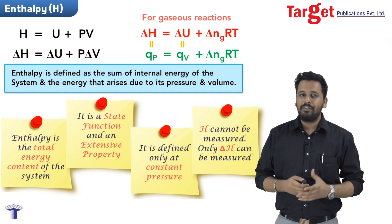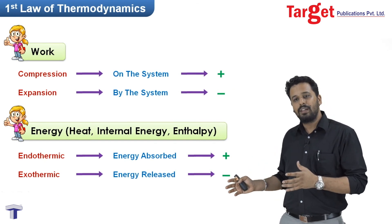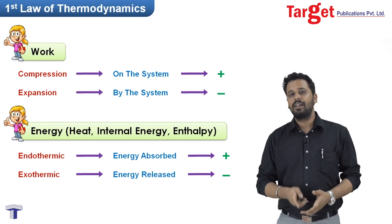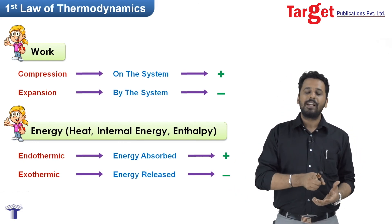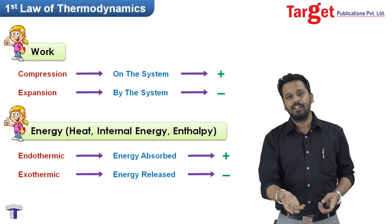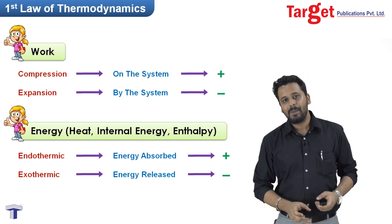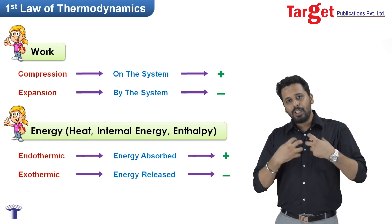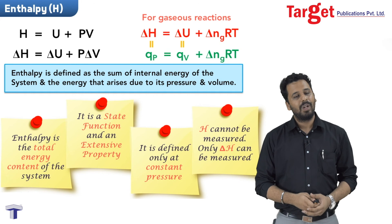As for sign convention — we already covered this when studying the first law of thermodynamics. Whether it is heat, internal energy, enthalpy, or any kind of energy, always follow the standard convention: in exothermic reactions it will be negative, in endothermic reactions it will be positive. Just like when money goes out, the balance becomes negative — that's why exothermic reactions have negative enthalpy change. When money comes in, balance becomes positive — similarly, for endothermic reactions, ΔH is positive.